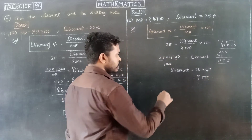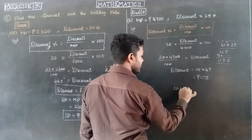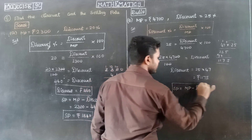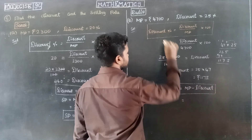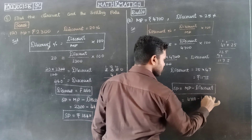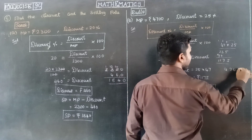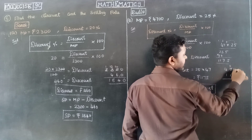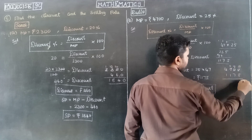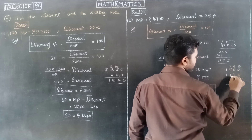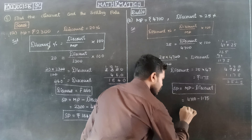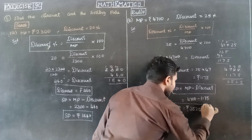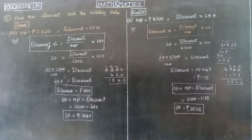Now for the selling price. Selling price is equal to marked price minus discount — this is the formula to find selling price. Marked price is ₹4700 minus discount ₹1175. Subtracting: 4700 minus 1175. 0 minus 5 — borrow, 10 minus 5 is 5; 9 minus 7 is 2; 6 minus 1 is 5; 4 minus 1 is 3. So the selling price of the radio is ₹3525.